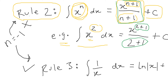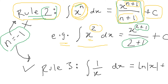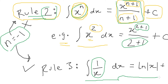There is an important disclaimer: Rule 2 cannot be applied if the power is equal to minus 1. If you have x to the power minus 1 — which means 1 divided by x — you cannot apply Rule 2. In that case you must apply Rule 3, which tells you the original function is simply ln x plus C.